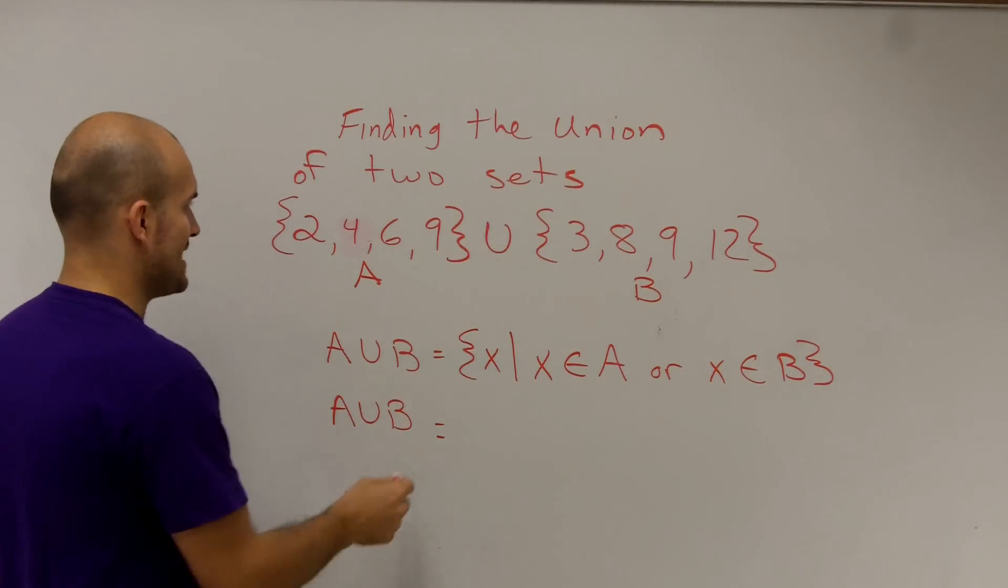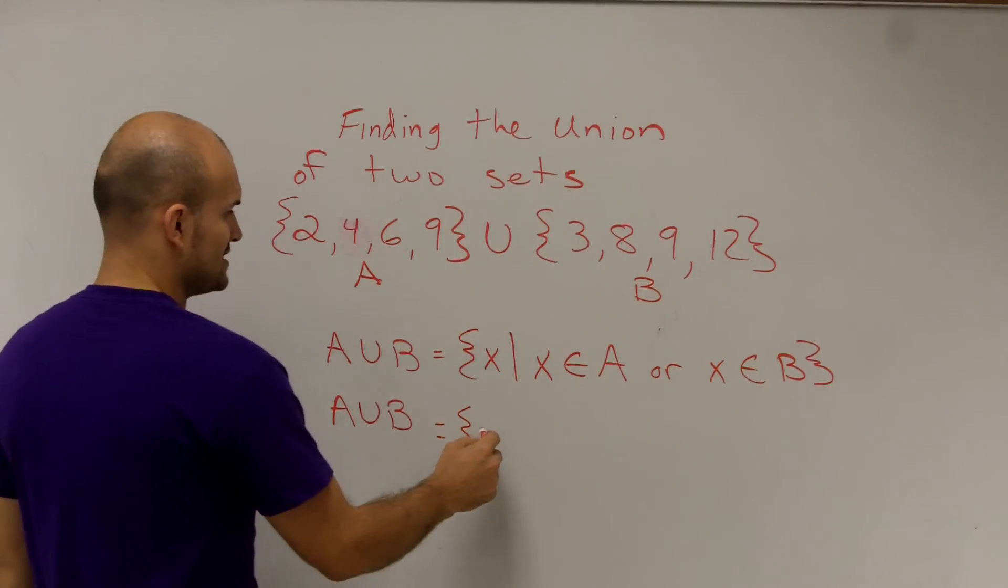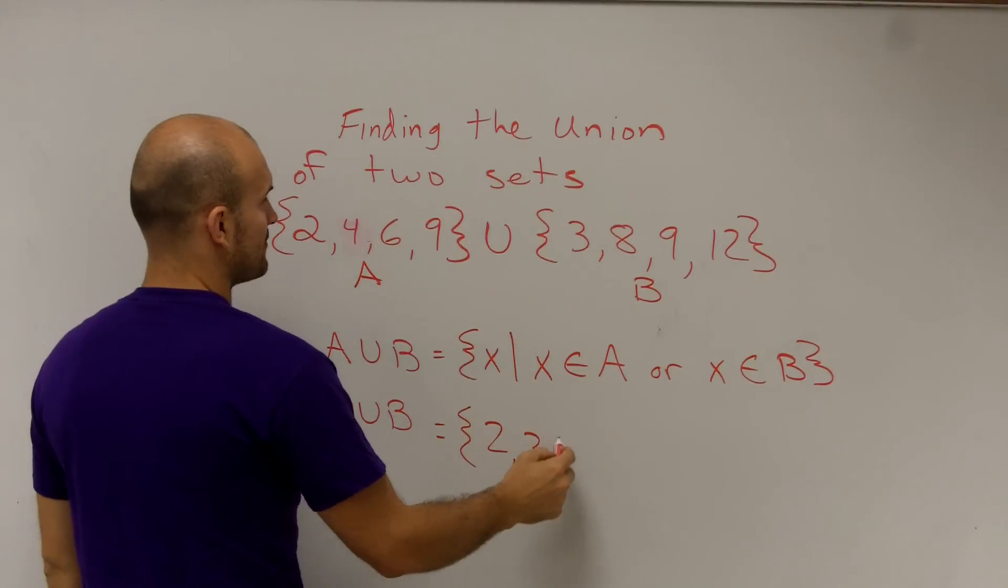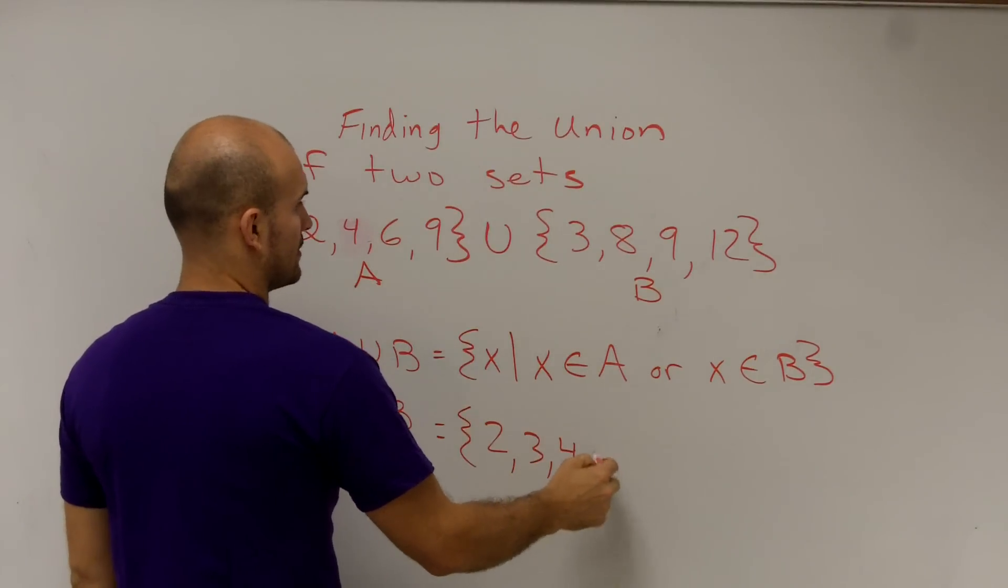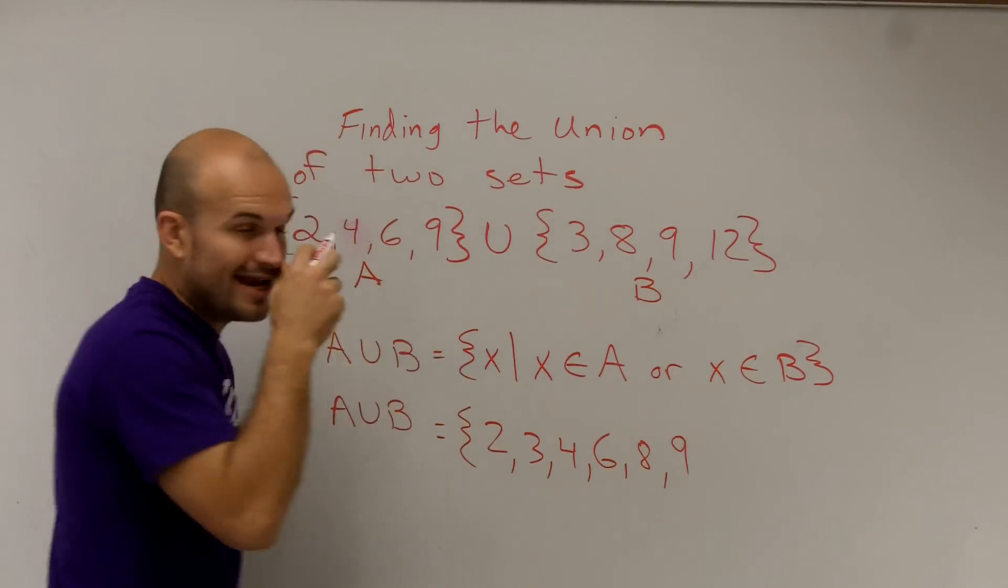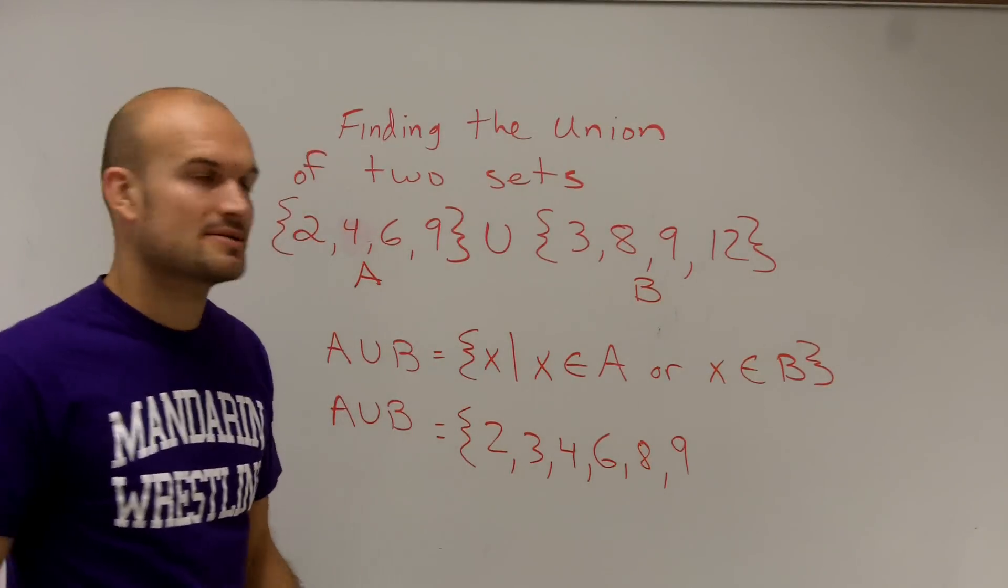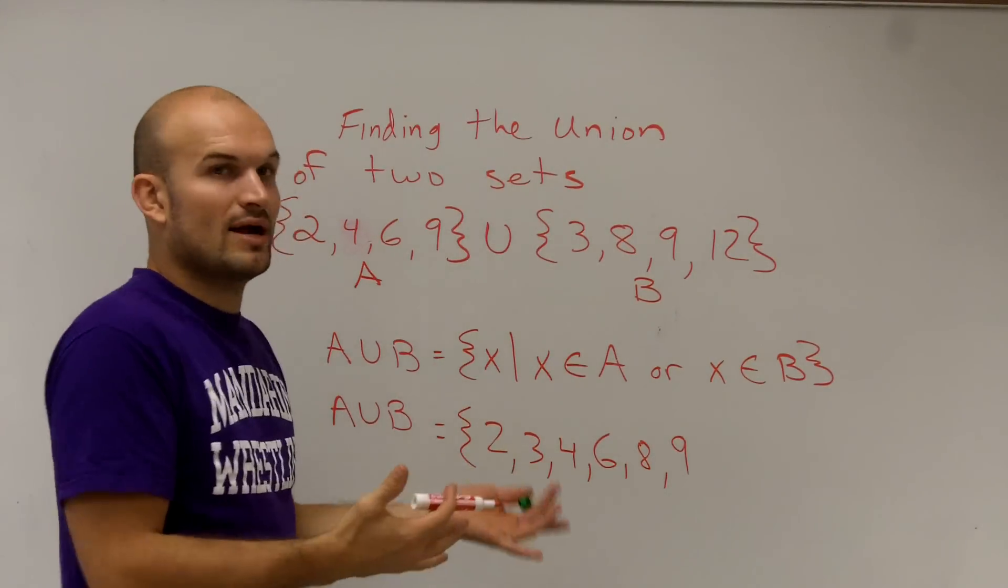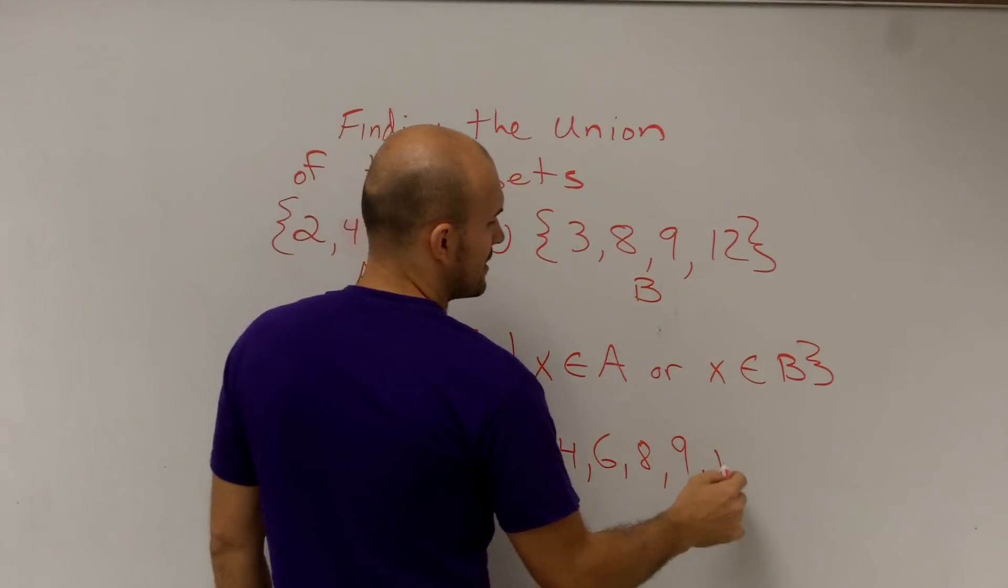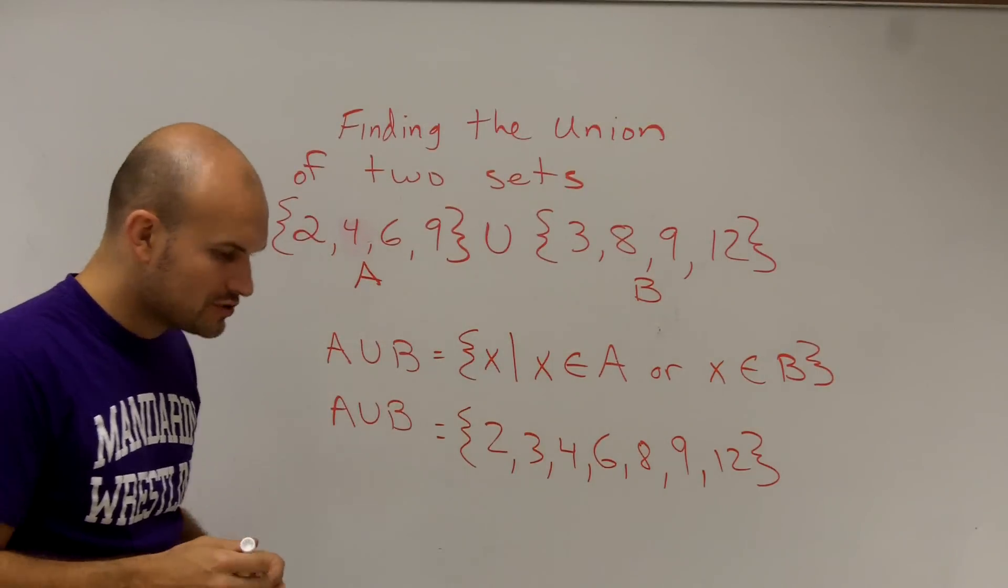Two, three, four, six, eight, nine - I don't need to write nine twice because we're just listing the elements. We're listing what elements are in either one of them or both, so I don't need to write nine twice - and twelve. That is the union of those two sets.